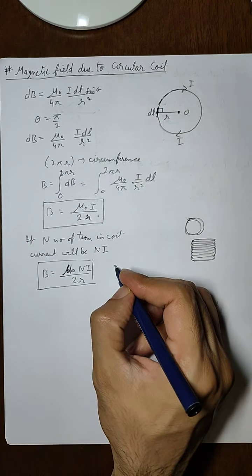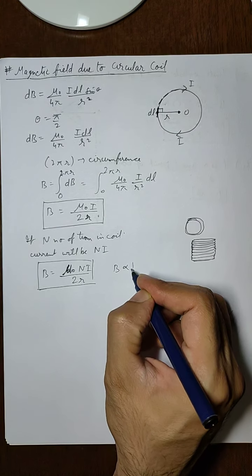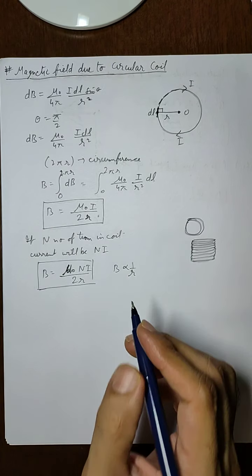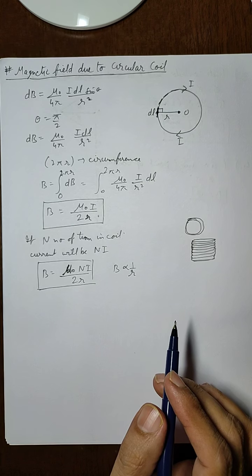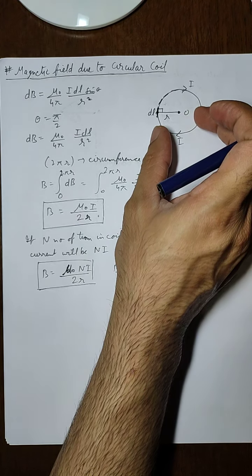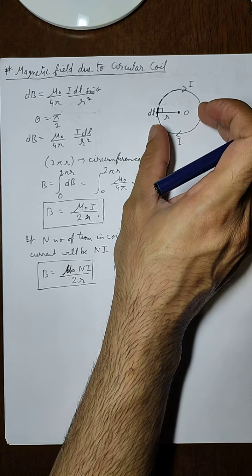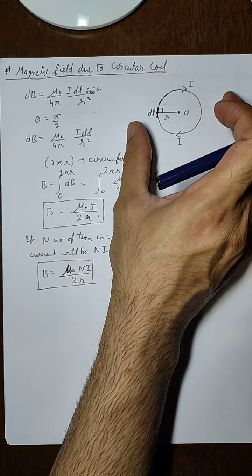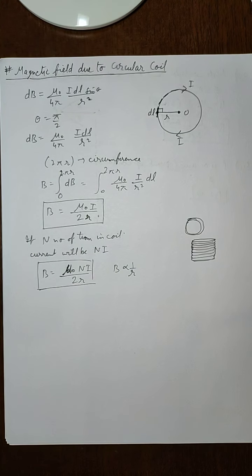We can see that B is inversely proportional to r, which means if the radius of the circular coil increases — if the coil becomes bigger and bigger — the magnetic field becomes smaller and keeps on decreasing.